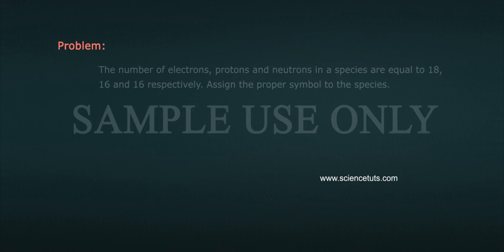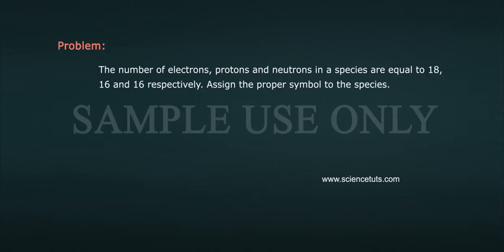Problem: The number of electrons, protons and neutrons in a species are equal to 18, 16 and 16 respectively. Assign the proper symbol to the species. Solution.